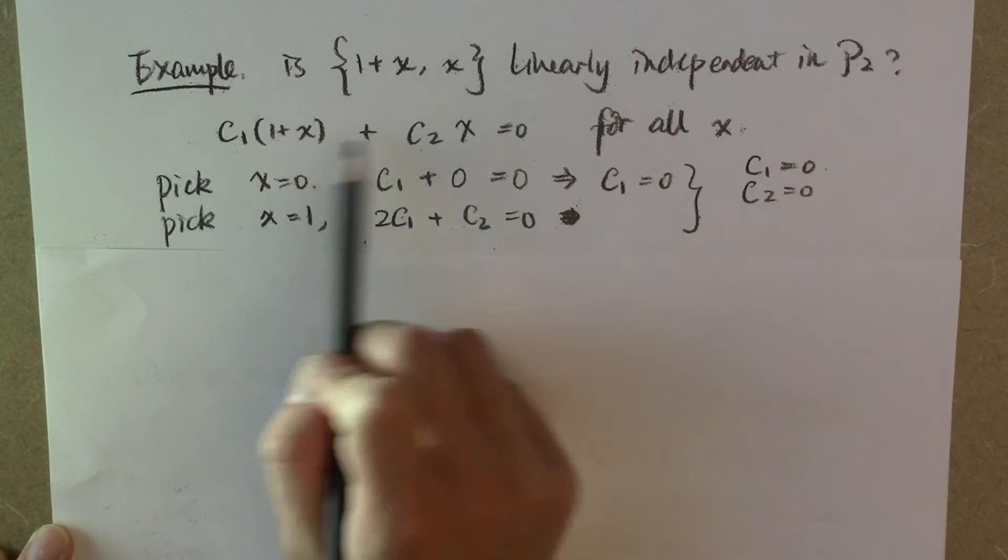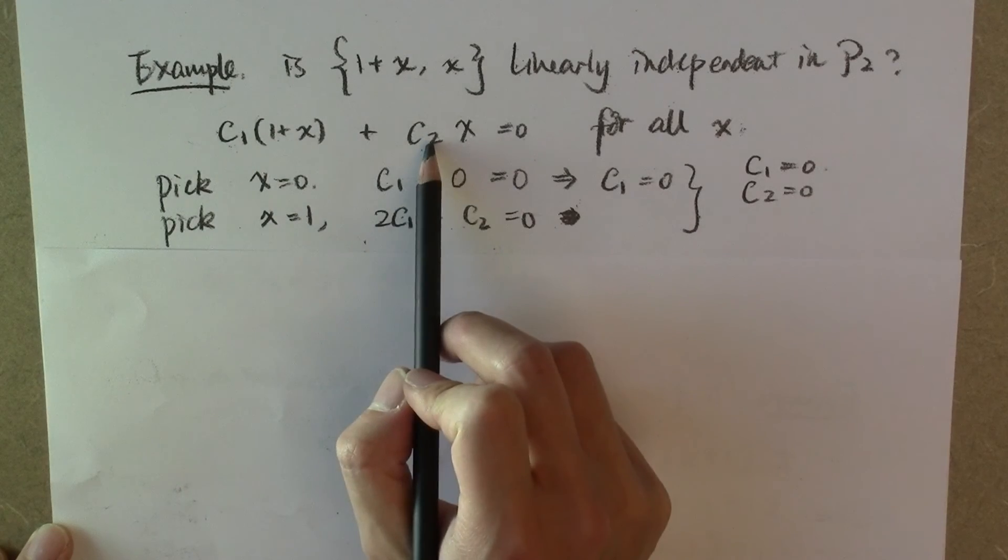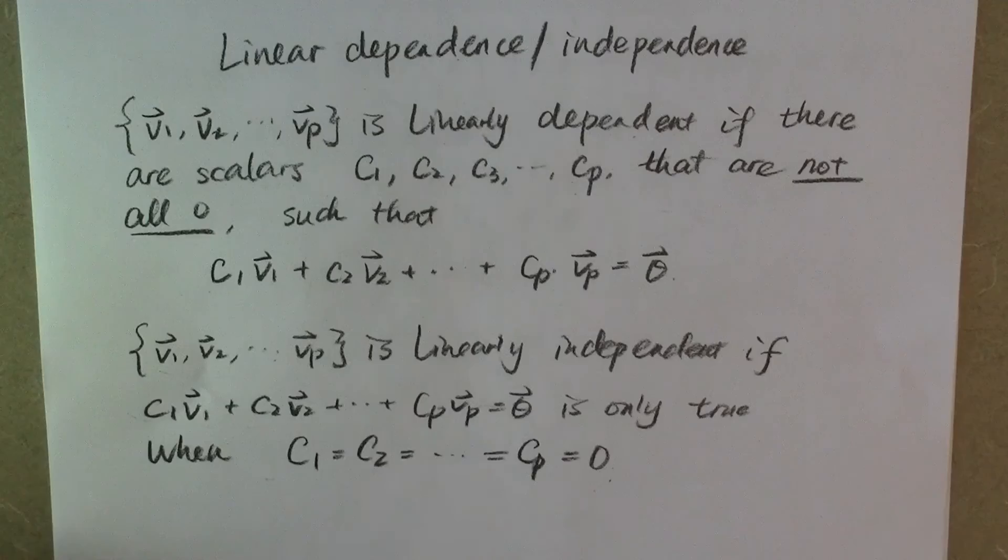From this linear dependence relation, we know both the scalars c sub 1 and c sub 2 have to be equal to zero, which means, by definition, this set of vectors is linearly independent.